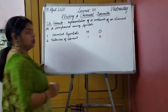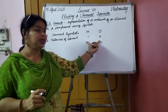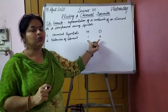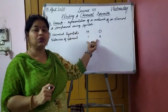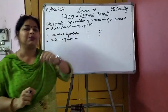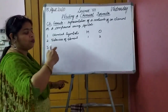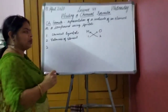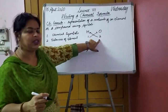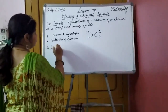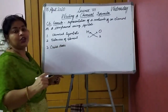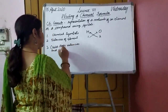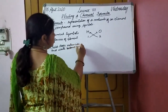The second step is to write down the valencies of the elements — like 1 and 2. This you will have to learn, otherwise you cannot make the formula. We need the table from the concept of valency that we did yesterday. From there you will have to learn the valencies. Now after you have written the valencies, what is the third step? The third step says that you criss-cross the valencies.